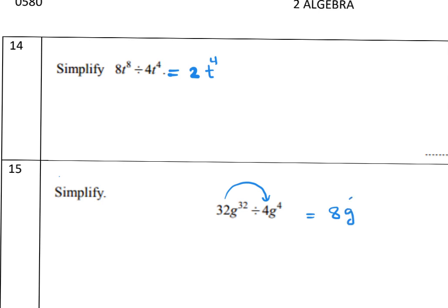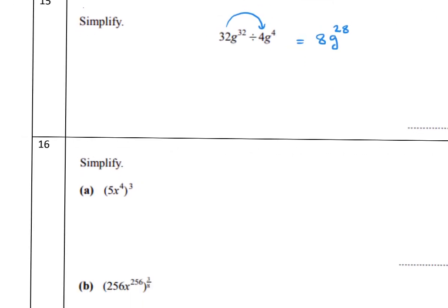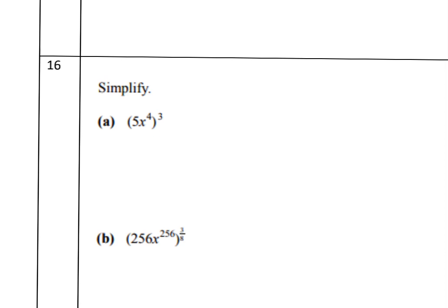For this problem: distribute the power. 5^3 equals 125, then multiply the powers for x — so the answer is 125x^12.